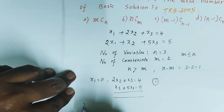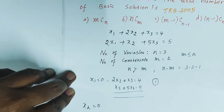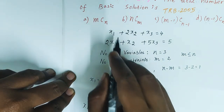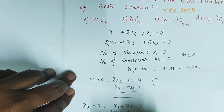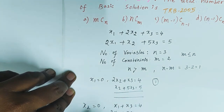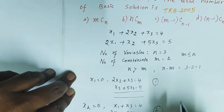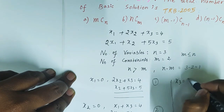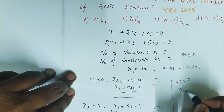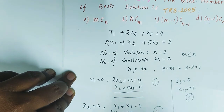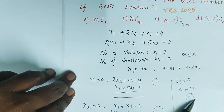Another case: set x2 equal to 0, giving equations x1 plus x3 equals 4 and 2x1 plus 5x3 equals 5 — this is a second solution. Final case: set x3 equal to 0, giving a third solution. So the total number of basic solutions is 1, 2, 3 — which equals 3C2 = nCm.